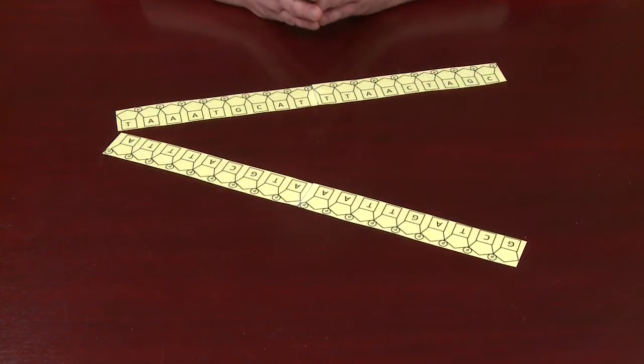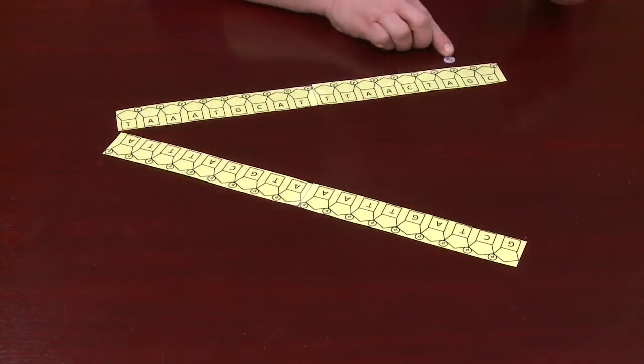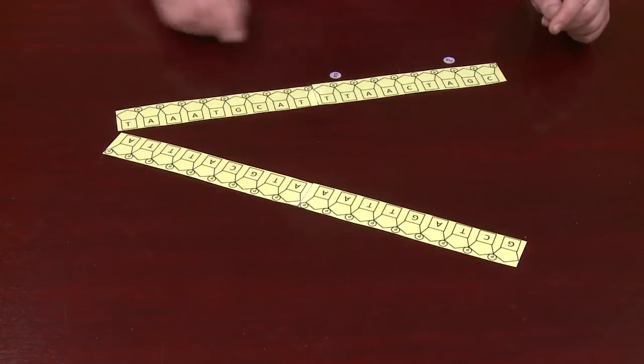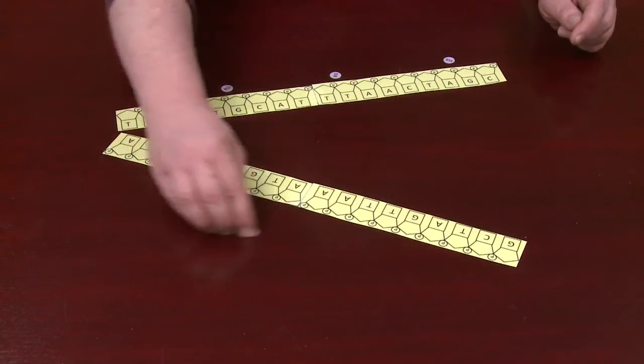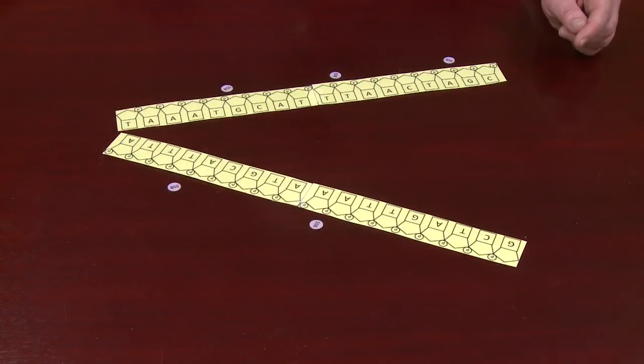The DNA doesn't like being separated like that. To keep it apart, we have single-stranded binding proteins coming in. They attach to the two strands of DNA and hold them apart.